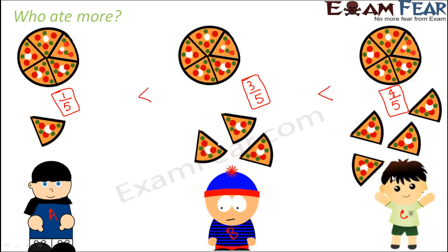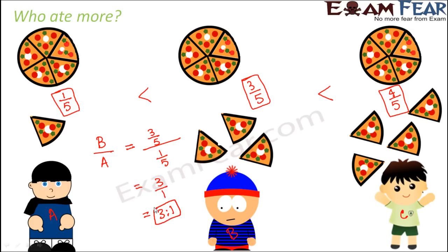Now if we want to compare how much one person ate with respect to another — for example, how much did B eat compared to A — we know B ate more than A because three-fifths is greater than one-fifth. But by how many times? We find the ratio of what B ate to what A ate: three-fifths divided by one-fifth equals three-to-one.